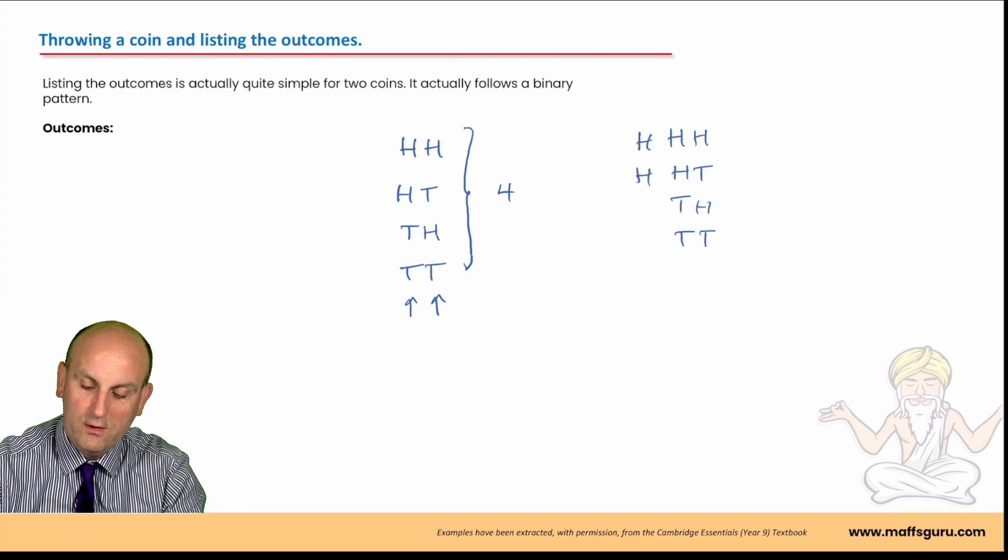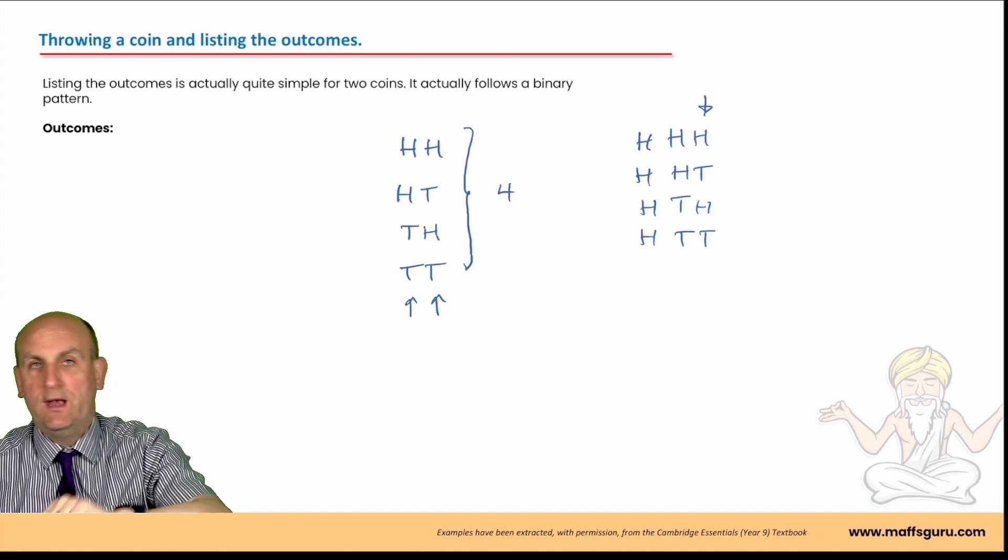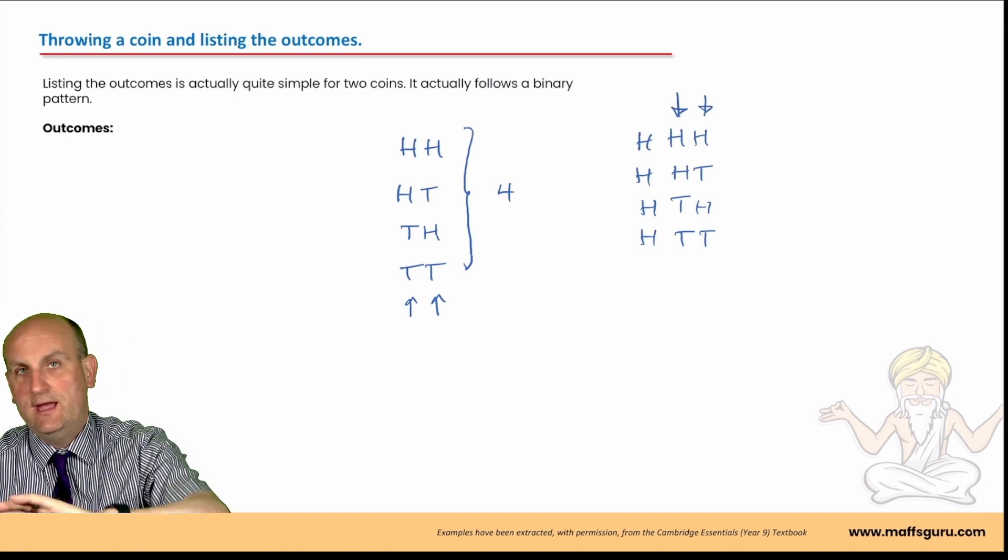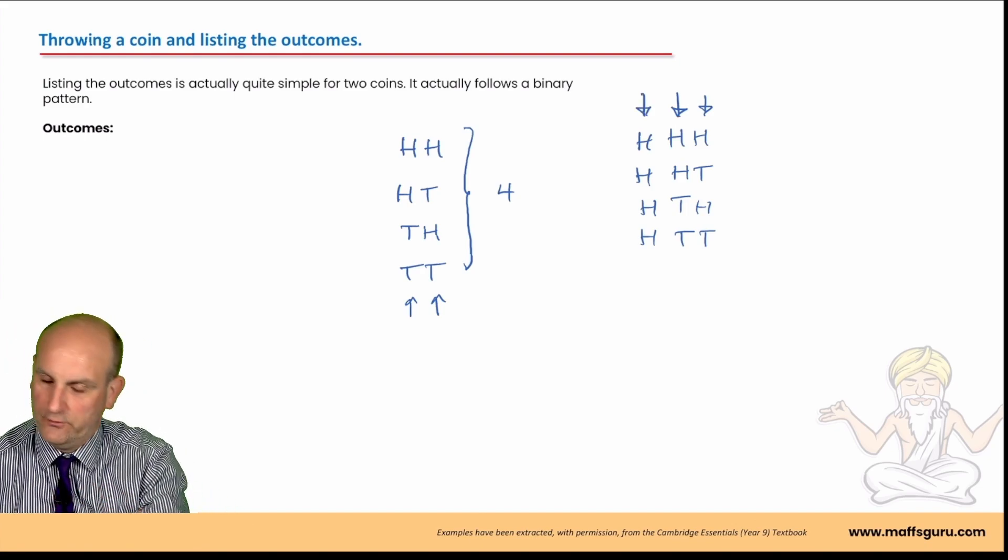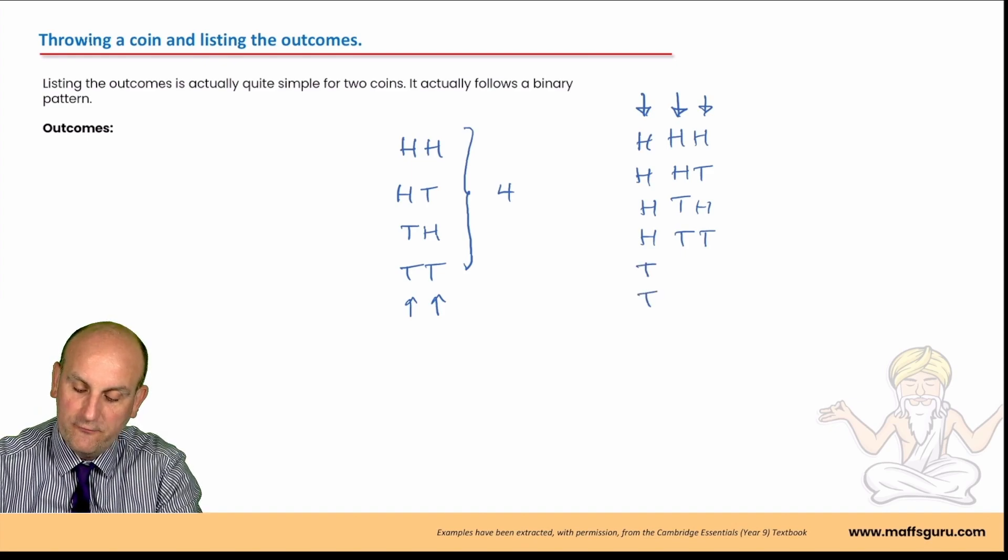If there was a third column, so if I wrote this out as head, head, head, tail, tail, head and tail and tail. If I now added a third column in, what you would find is the first four would all be heads because this first column was one head, one tail, one head, one tail. The next column would be two heads, two tails, two heads, two tails and that column there is four heads, four tails.